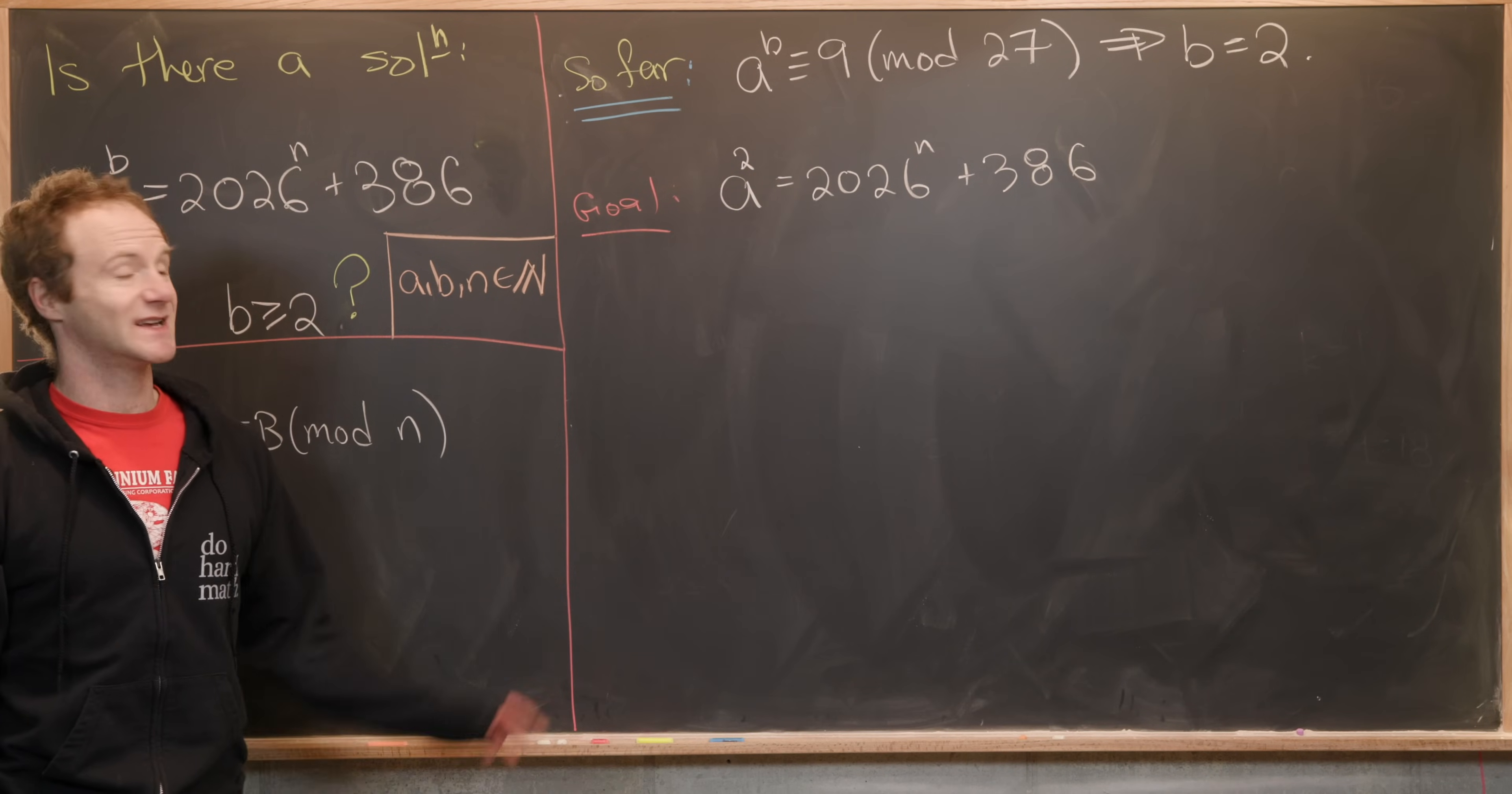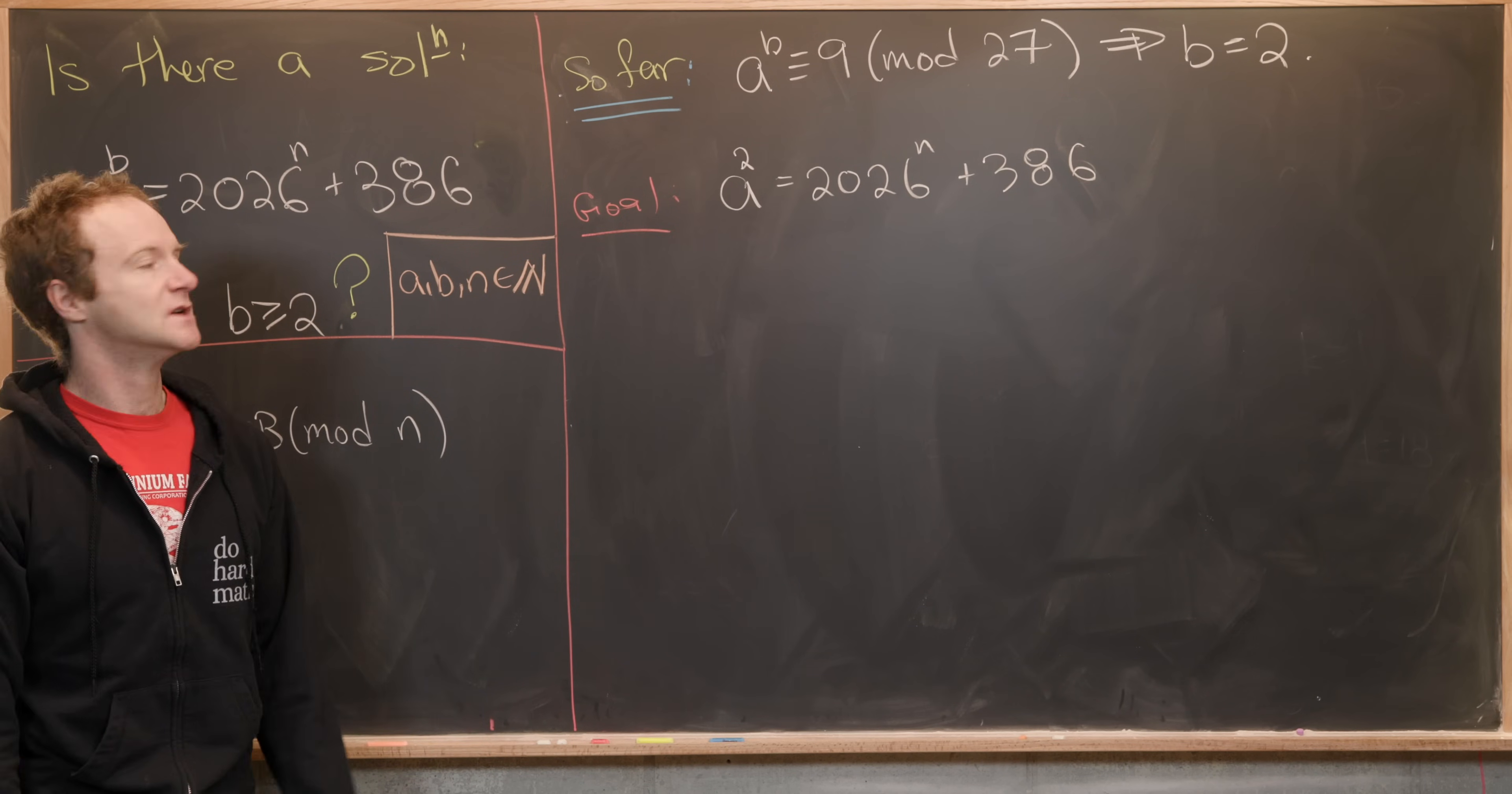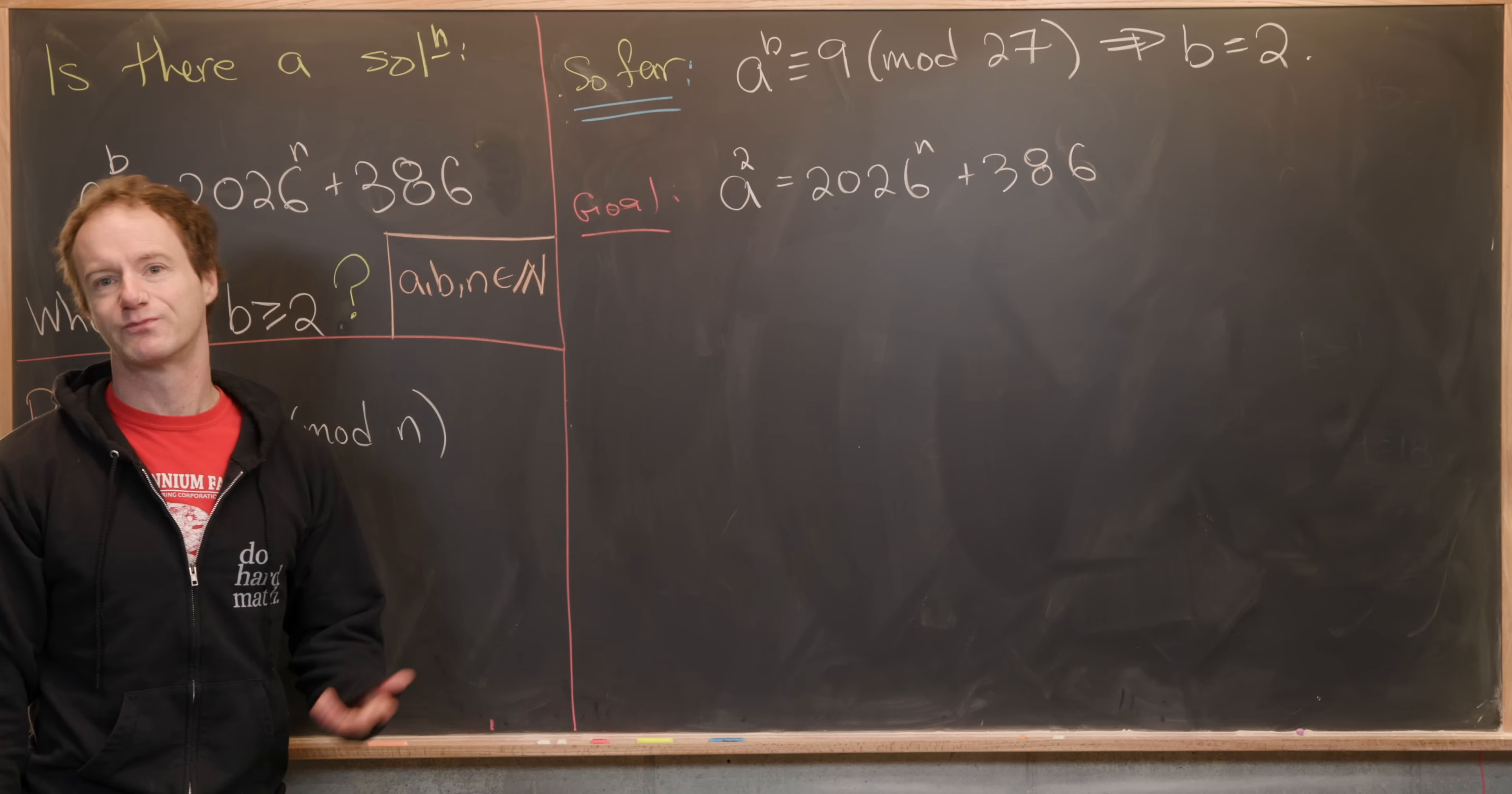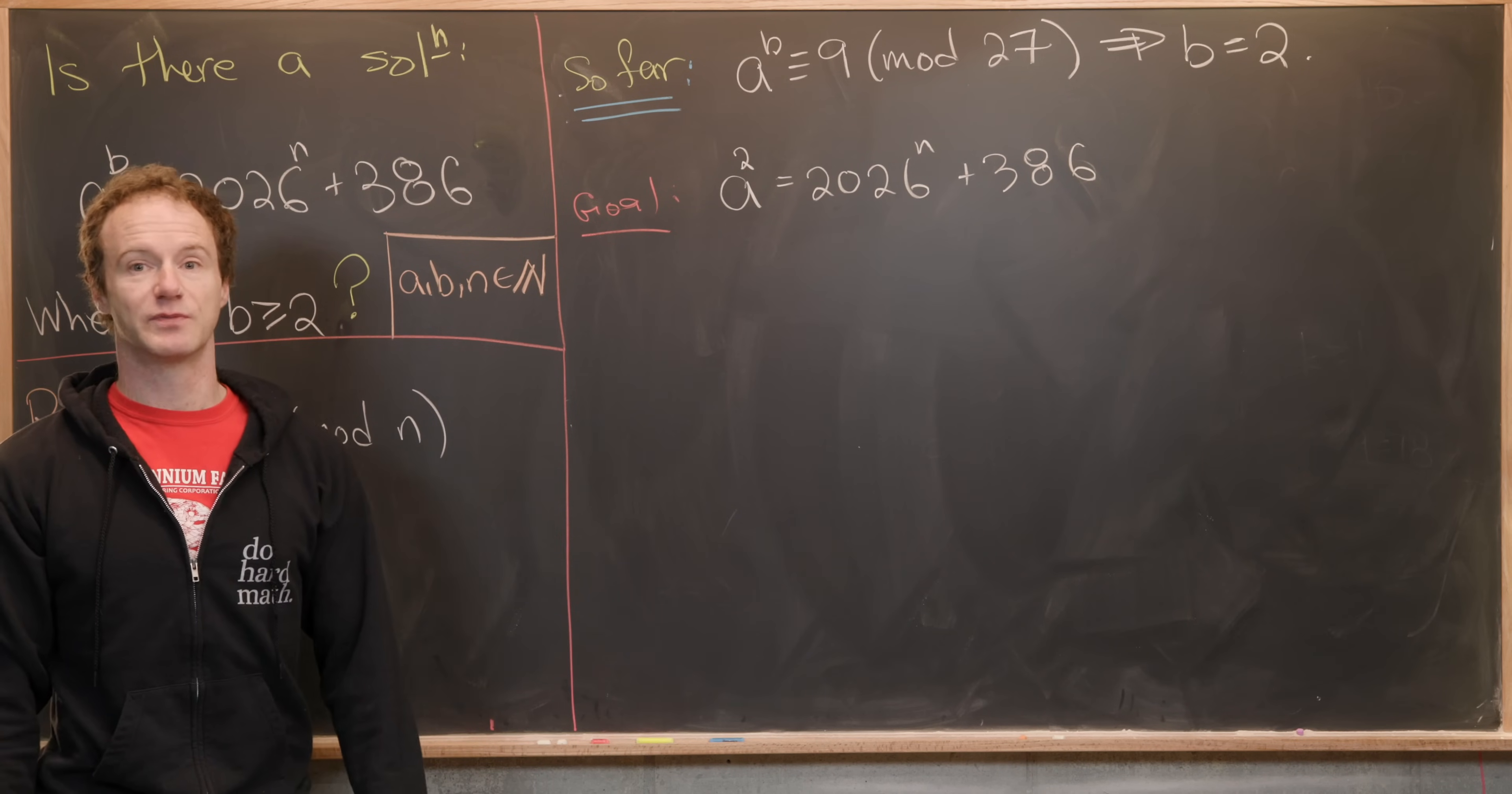Now we'll use a similar trick to what we did before but instead of working in the group of units we'll be looking at what are some possible perfect squares modulo something. So what you want to do is reduce this modulo some number so that this exponent of 2026 is pretty simple. Maybe it could be equal to 1. So looking at that there are probably a lot of different choices but this is one more than a multiple of 5 so that's probably a good place to start.